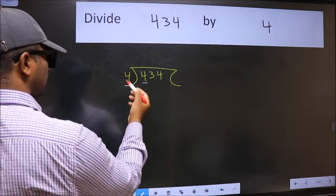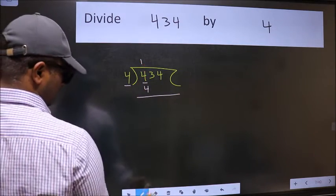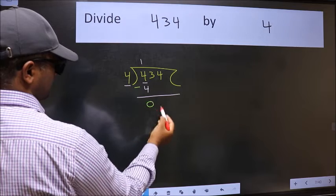When do we get 4 in the 4 table? 4 once is 4. Now we should subtract. We get 0.